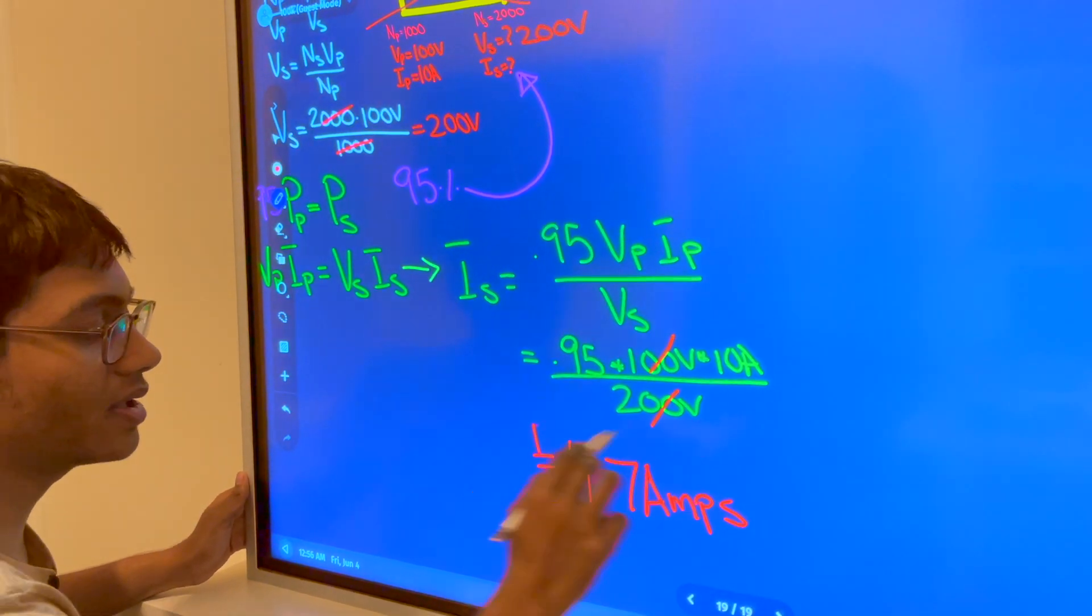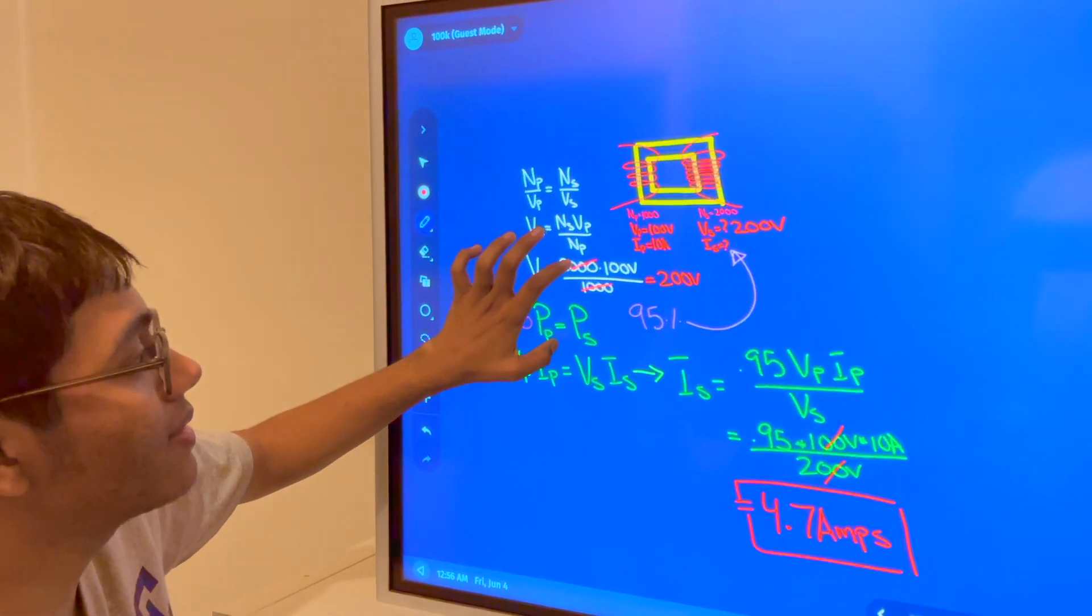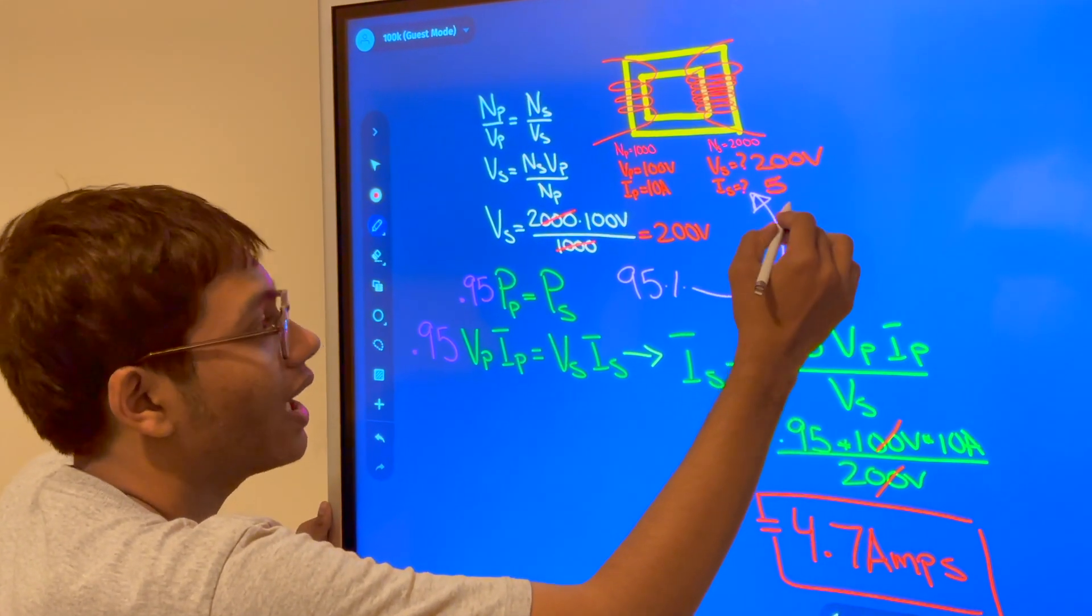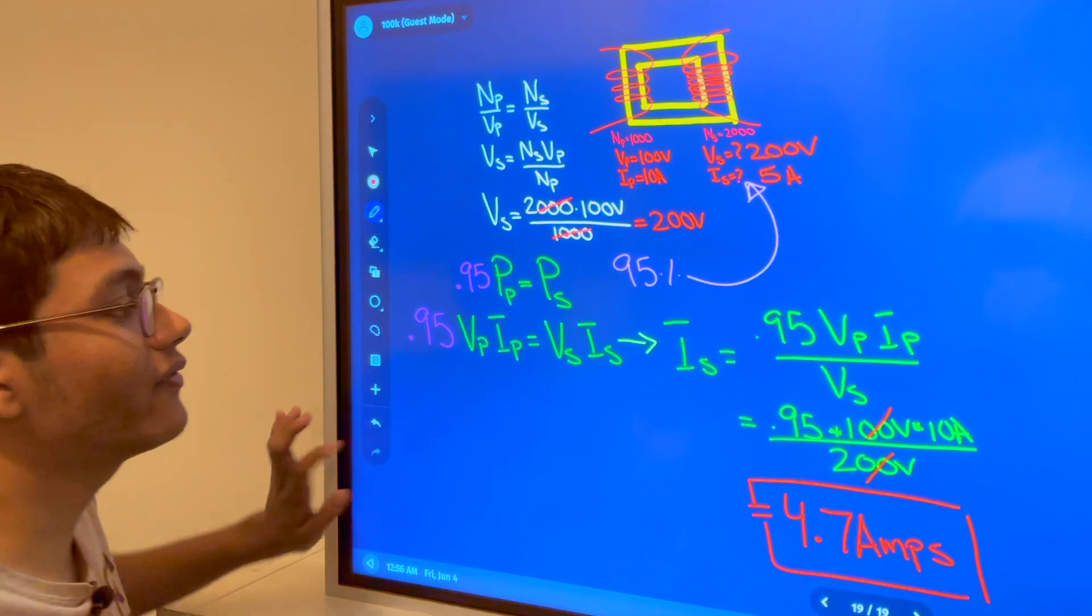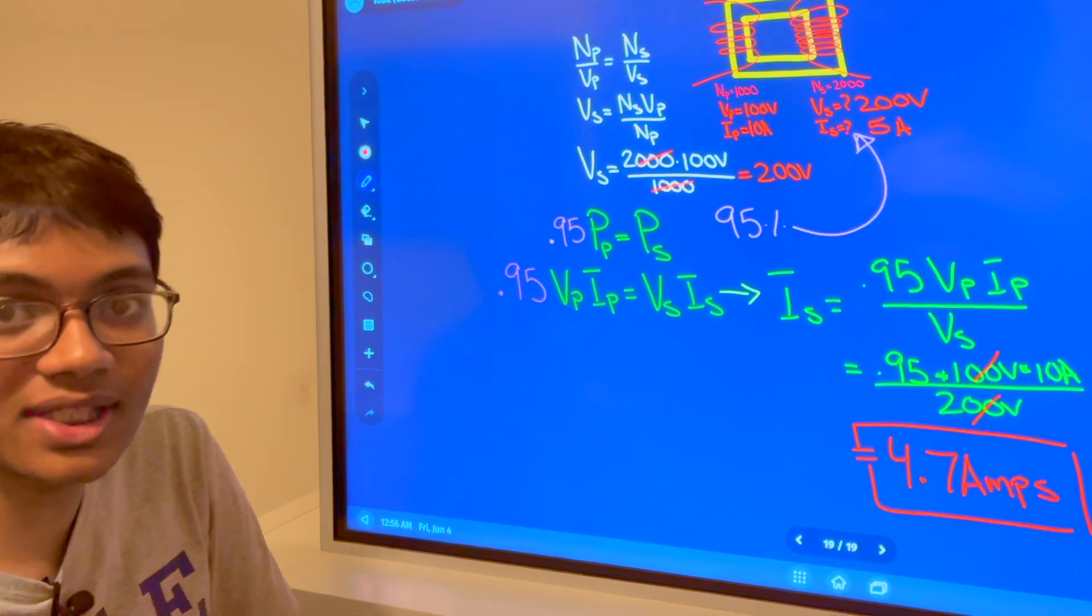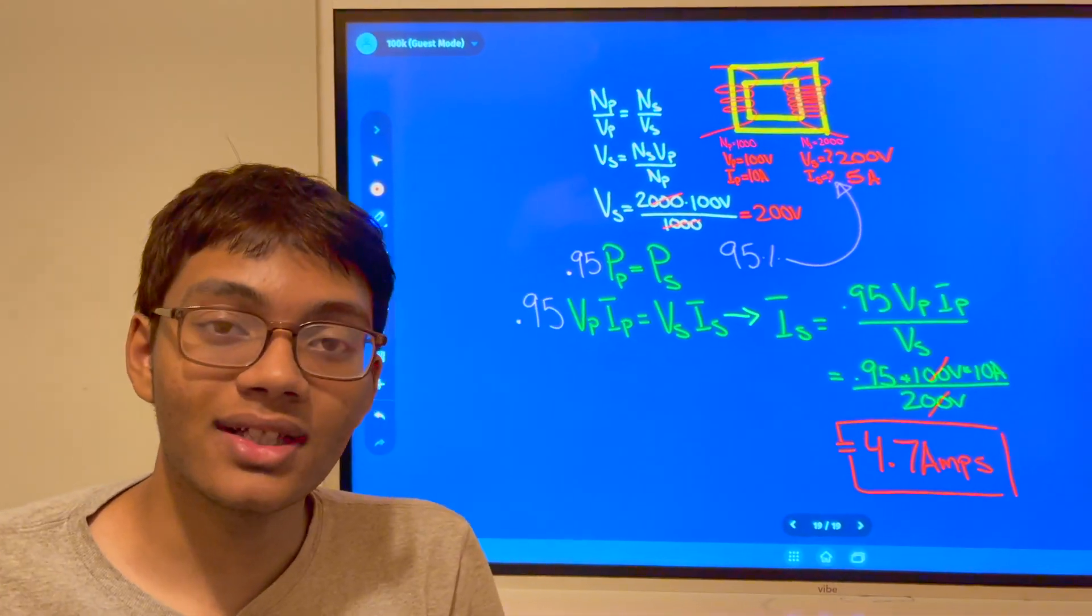So make sure you get that answer. The secondary current is about 4.7 amps, which is much less than my primary current of 10 amps. That's how a transformer works. This is a step-up transformer that stepped up the voltage. Thanks for watching this episode. Don't forget to like, share, and subscribe.